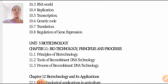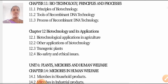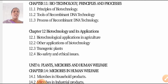Unit 5 is Biotechnology. Chapter 11 is Biotechnology: Principles and Processes — the principles of biotechnology, tools of recombinant DNA technology, and process of recombinant DNA technology. Chapter 12 is Biotechnology and Its Applications, including biotechnological applications in agriculture and other applications of biotechnology.